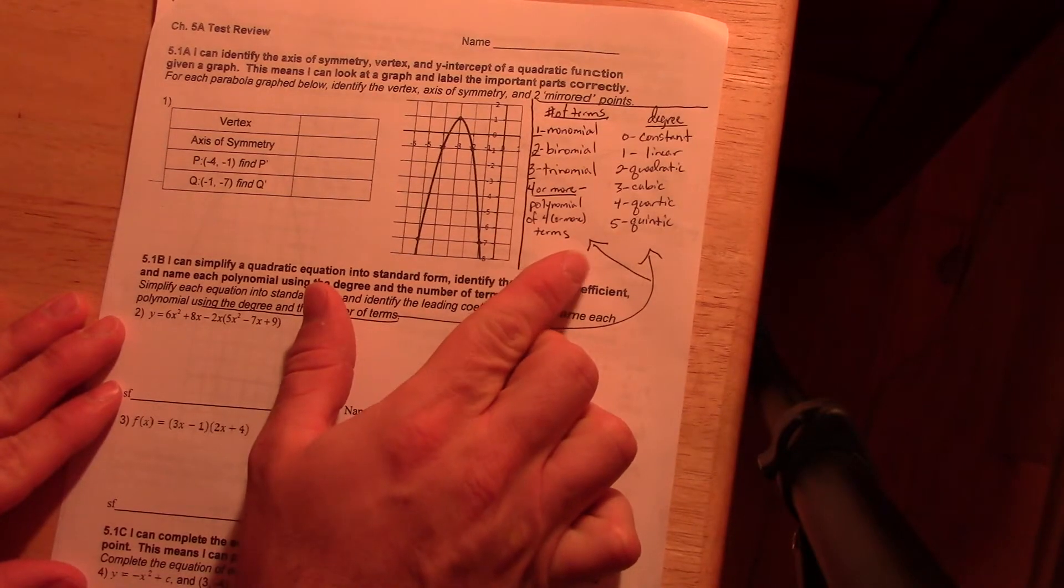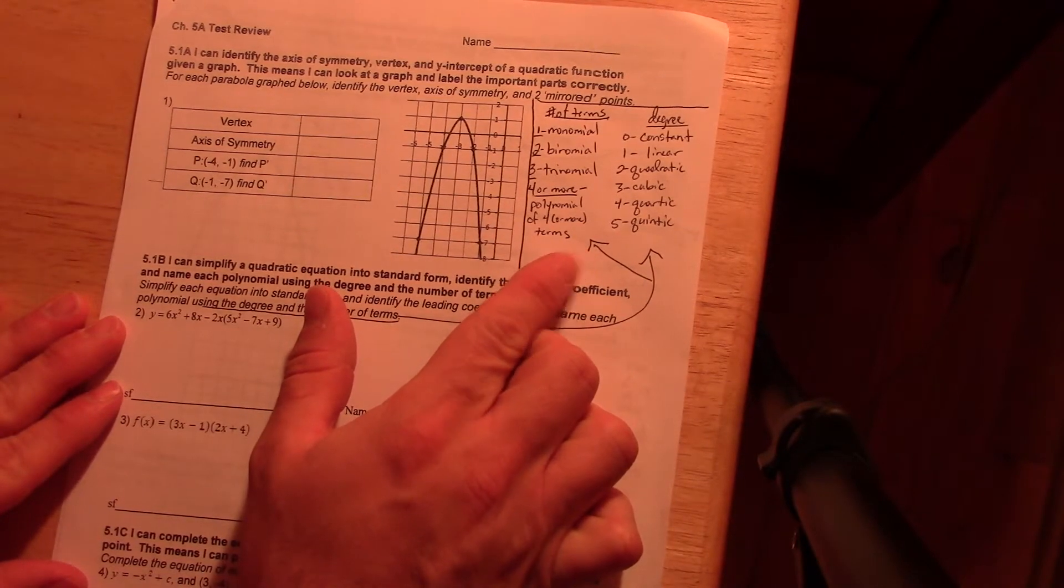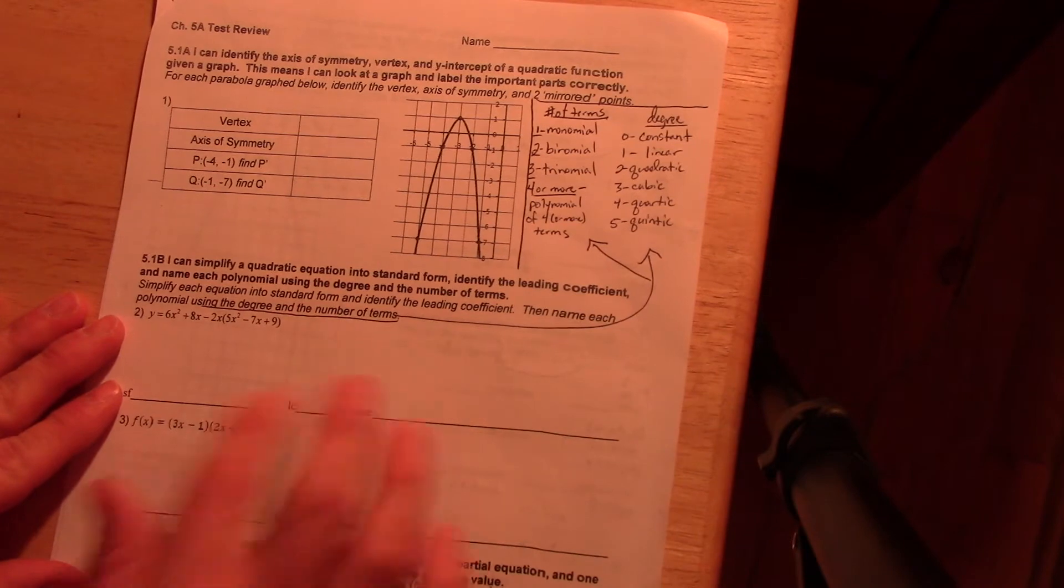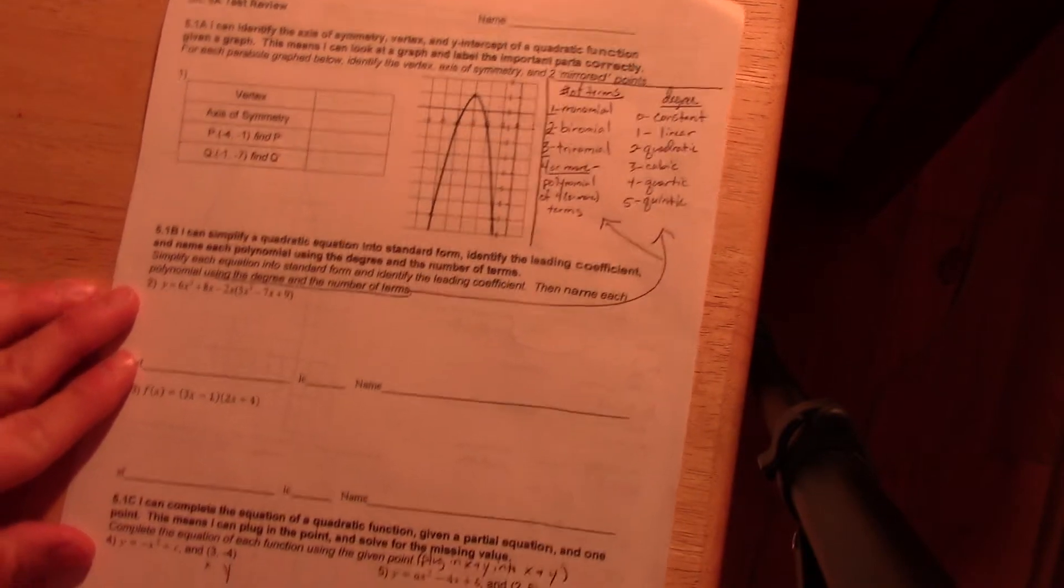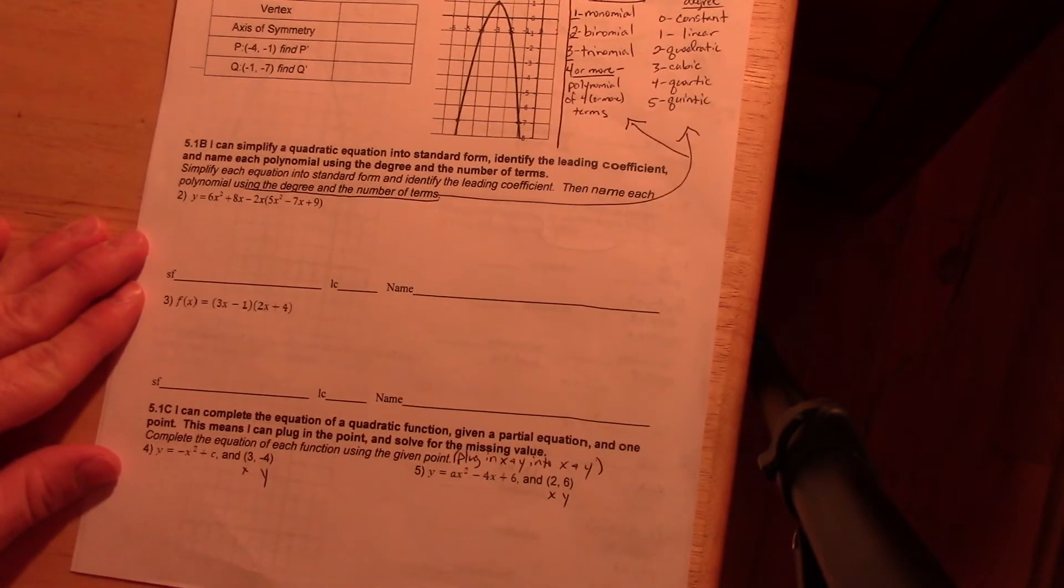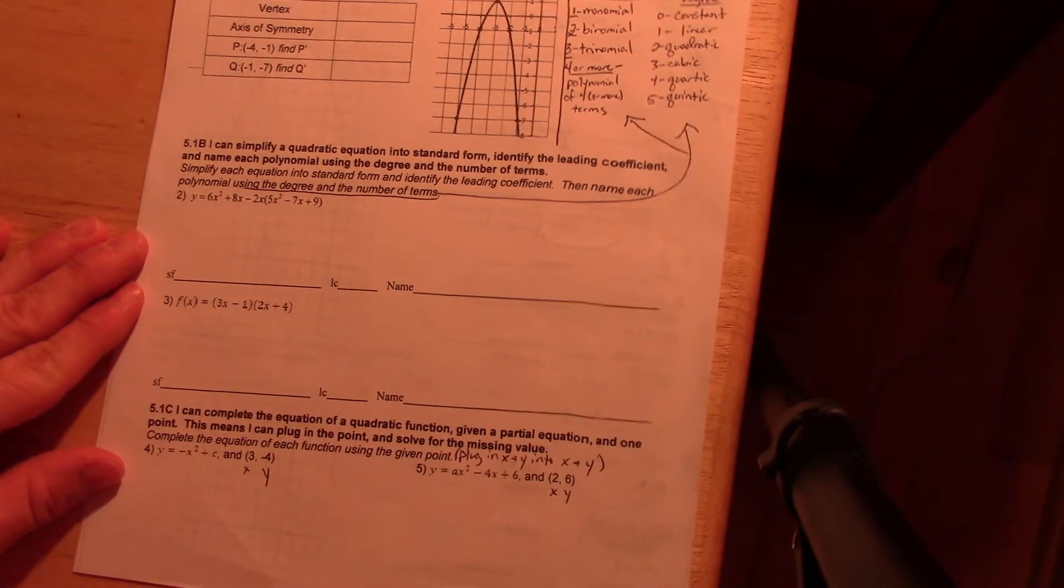Right here I want to point out that I'm naming all the things by number of terms and degree, which is what really number two and three are about. And then down at the bottom, the only thing I have written down here is just that we're plugging x and y into x and y.